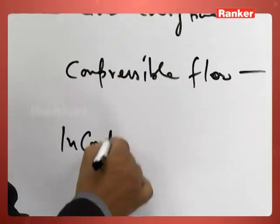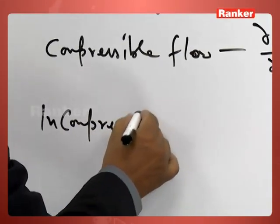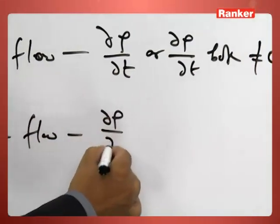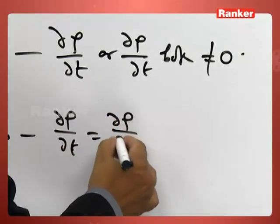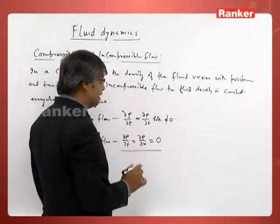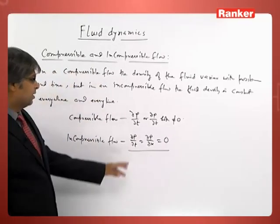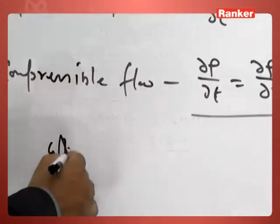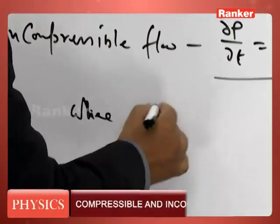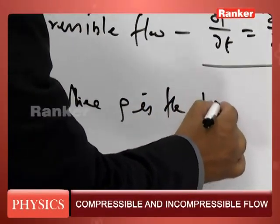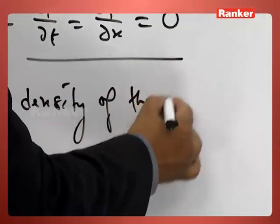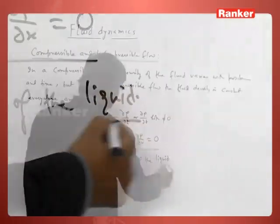Whereas, incompressible flow: ∂ρ/∂t = ∂ρ/∂x = 0. Every time they are zero. Rho (ρ) is the density of the liquid.